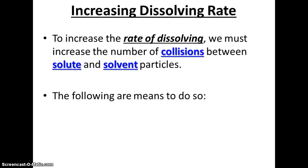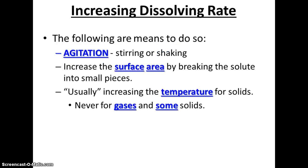There are a couple of different things that can increase the dissolving rate. In order to increase it, we must increase the number of collisions between solute and solvent particles. Number one: agitation — like stirring or shaking — will increase the surface area by breaking the solute particles into smaller pieces. If we swirl sodium chloride around in water, it's moving faster and has more collisions with water molecules. Another factor is increasing temperature, but that only works for solids — it never works for gases and only works for some solids.